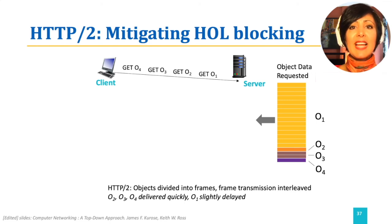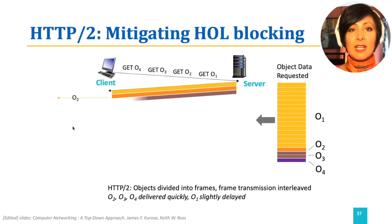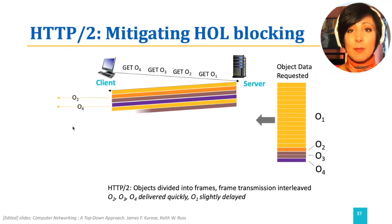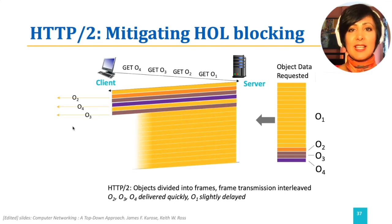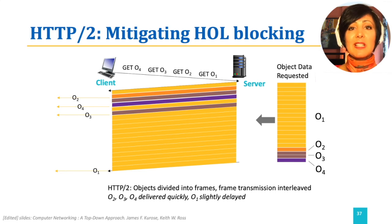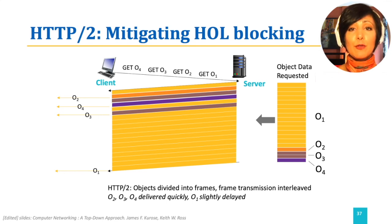HTTP 2 solves this problem by dividing objects into frames and interleaving the transmission of those frames. This causes O2, O3, and O4, which are smaller objects and therefore have a smaller number of frames, to be delivered quickly. O1, with its larger number of frames, will only slightly be delayed due to those frames interleaving in the beginning.